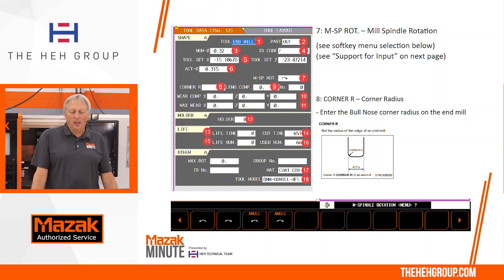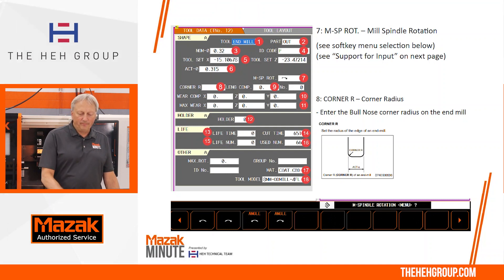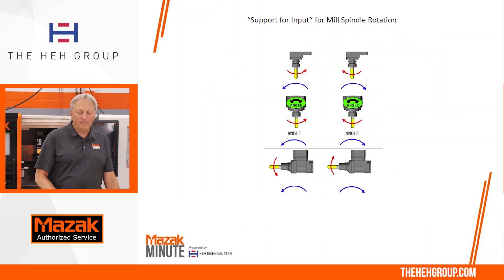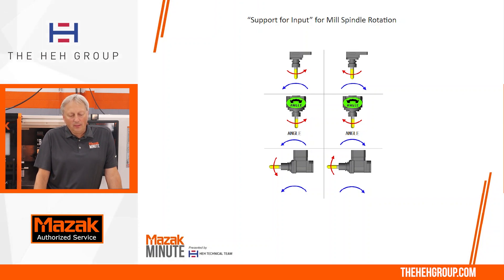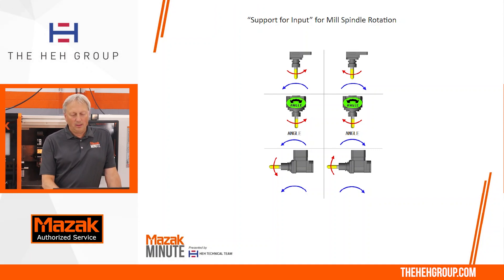Number eight is going to be the corner R, the radius of the bullnose on the end mill. In the support for input, you see the blue arrow representing the spindle rotation, in the middle you see the angle, and at the very bottom you see a horizontal milling head. Counterclockwise and clockwise blue arrows are shown for the spindle rotation.